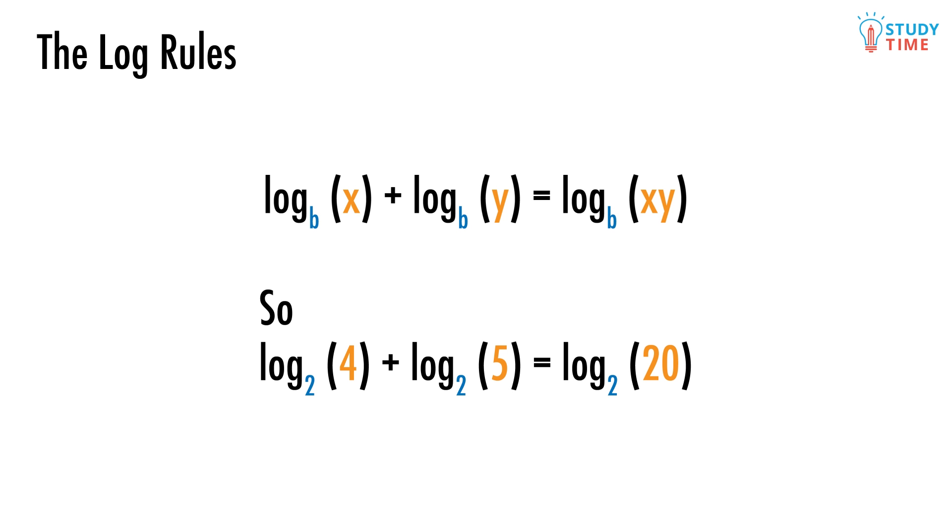So if you are given an expression like this, log base 2 of 4 plus log base 2 of 5, then in order to simplify this, all you'll do is make a single log with a base of 2 and an argument of 20, since 4 times 5 equals 20.